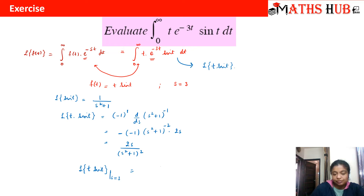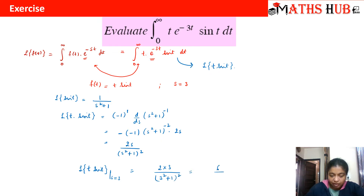Now substituting s = 3: we get 2·3 / (3²+1)² = 6 / (10)² = 6/100 = 3/50.